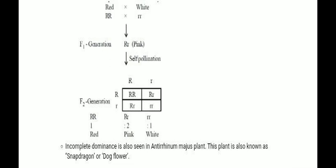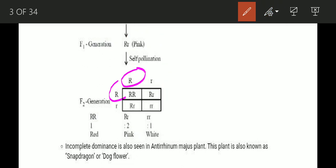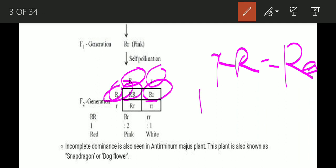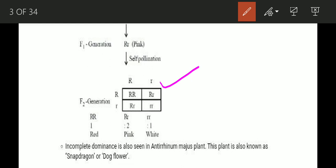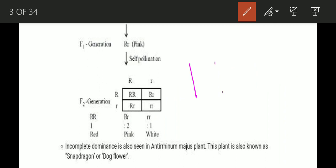If you look at the F2 generation, this is from self-pollination of the pink flower with genotype capital R small r. The resulting offspring are: capital R capital R giving red flower, capital R small r giving pink flower, and small r small r giving white flower. This gives the ratio of 1:2:1.